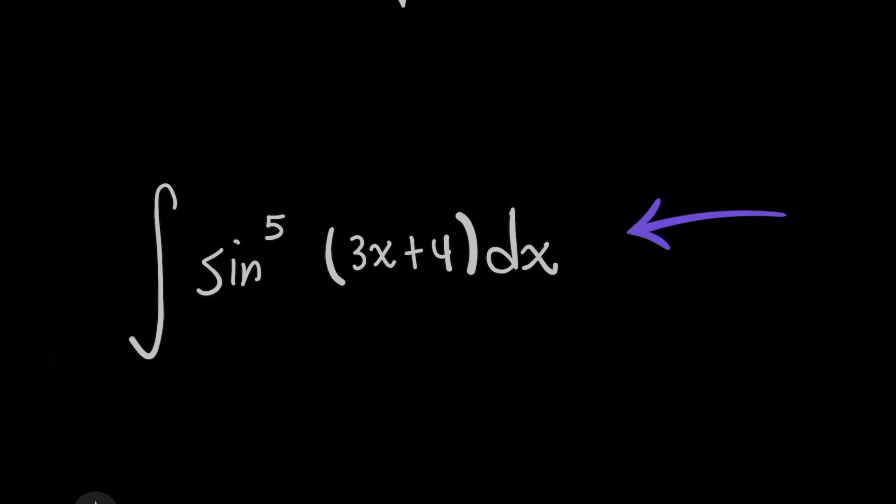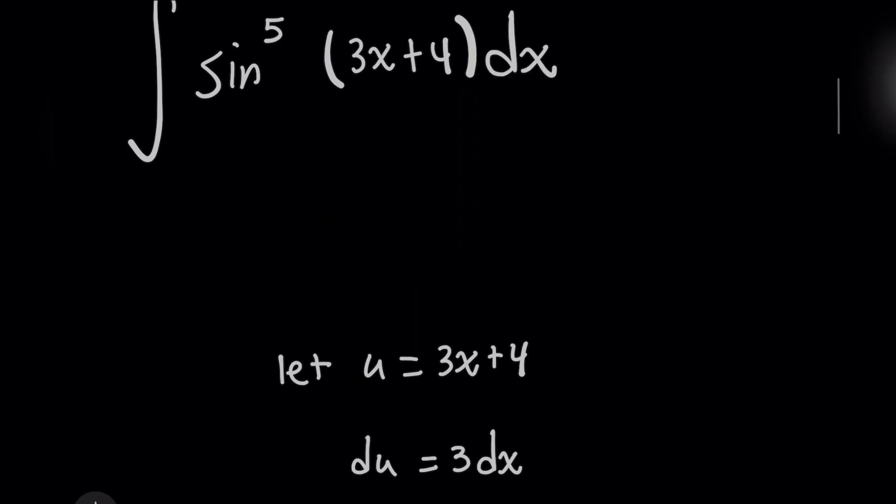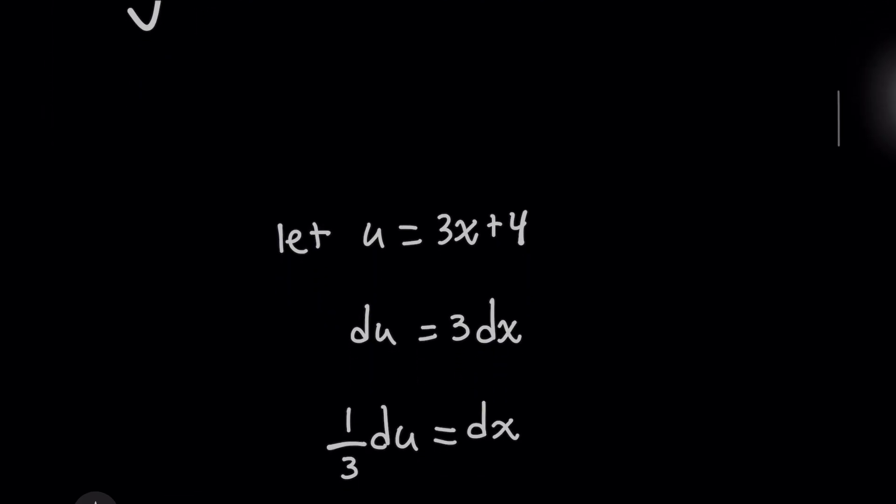When you see this problem, before jumping into complicated methods, first look at if a u-substitution here makes this simpler. Now taking the derivative of 3x plus 4 when I set it to this variable u will tell us that du will equal 3dx after we took the derivative of both sides. And this 3 here is simply a constant.